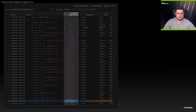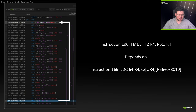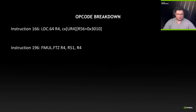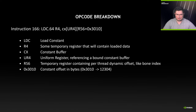To understand what this instruction is waiting on, you need to look at the dependency section. If you follow the arrows carefully, you will find some kind of relationship to another instruction. In this case, instruction 196 FMO is waiting on the result of instruction 166, the load constant instruction. And this is exactly what we are looking for. To better understand the relationship between these two instructions, we have to look at the opcode — both of them have the R4 register.